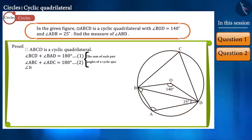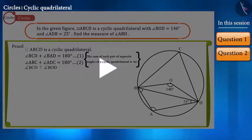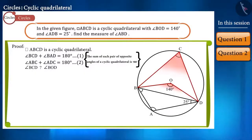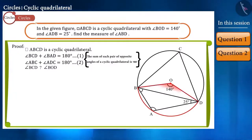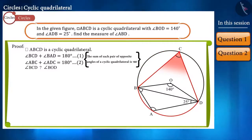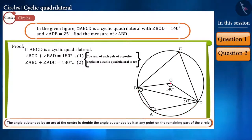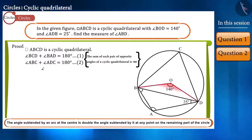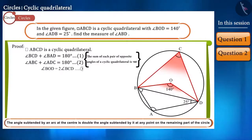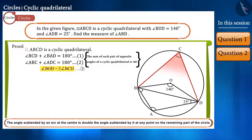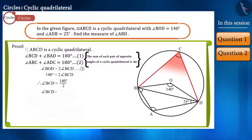Looking at the figure, can you determine a relationship between angle BCD and angle BOD? Pause the video and think about the answer. Yes friends, these two angles are the angles subtended by the same arc BD. Angle BOD is the angle subtended at the center by arc BD, and angle BCD is subtended by arc BD at point C, located on the remainder of the circle. The angle subtended by an arc at the center is twice the angle subtended at any point on the remainder of the circle. So, angle BOD equals twice angle BCD. We know the value of angle BOD, and placing it gives us angle BCD as 70 degrees.